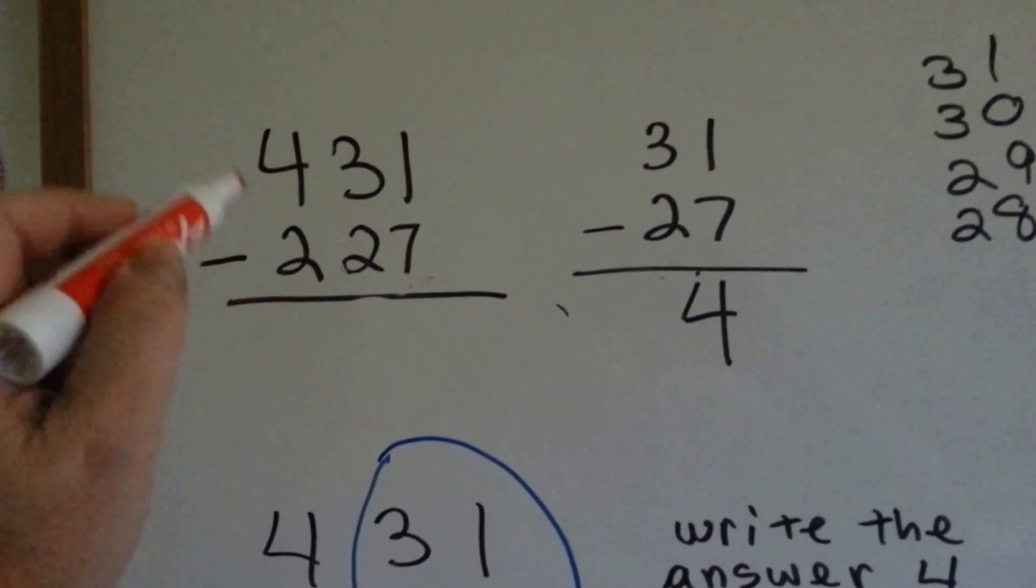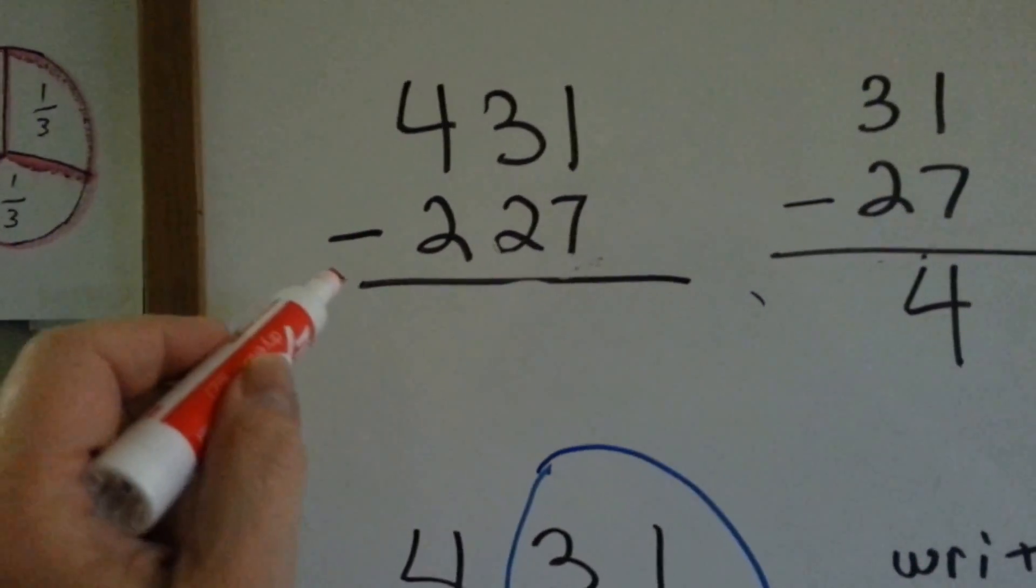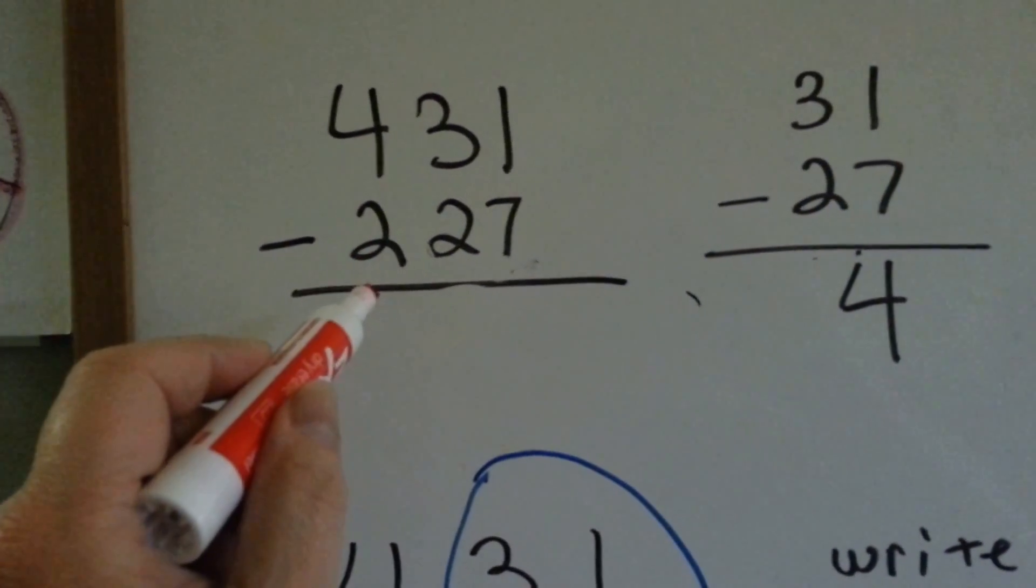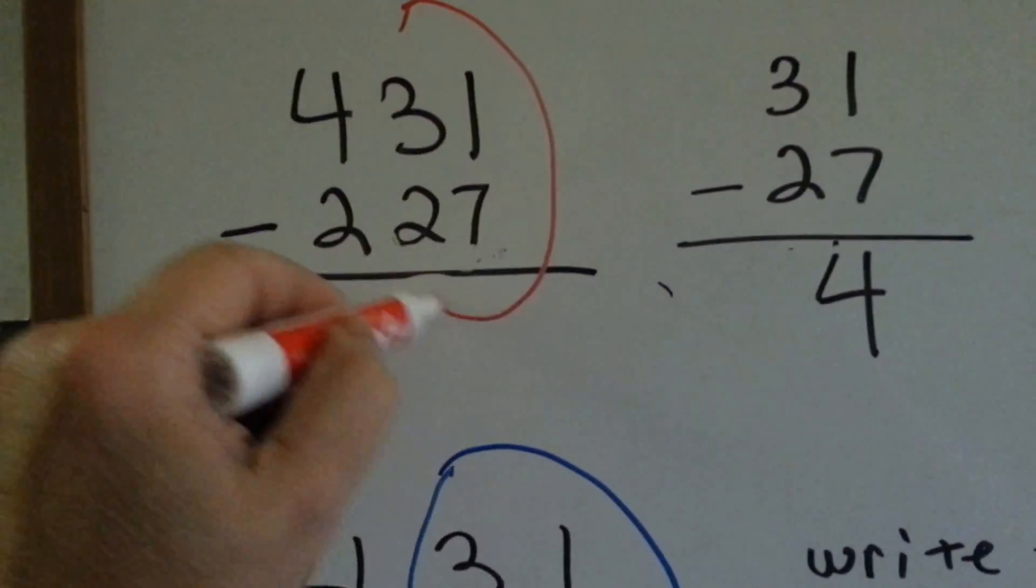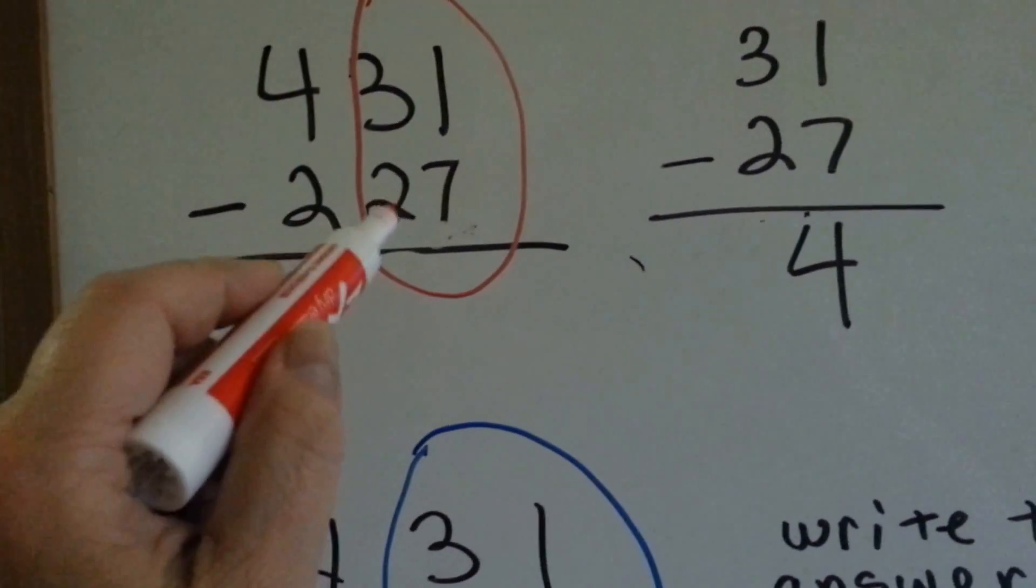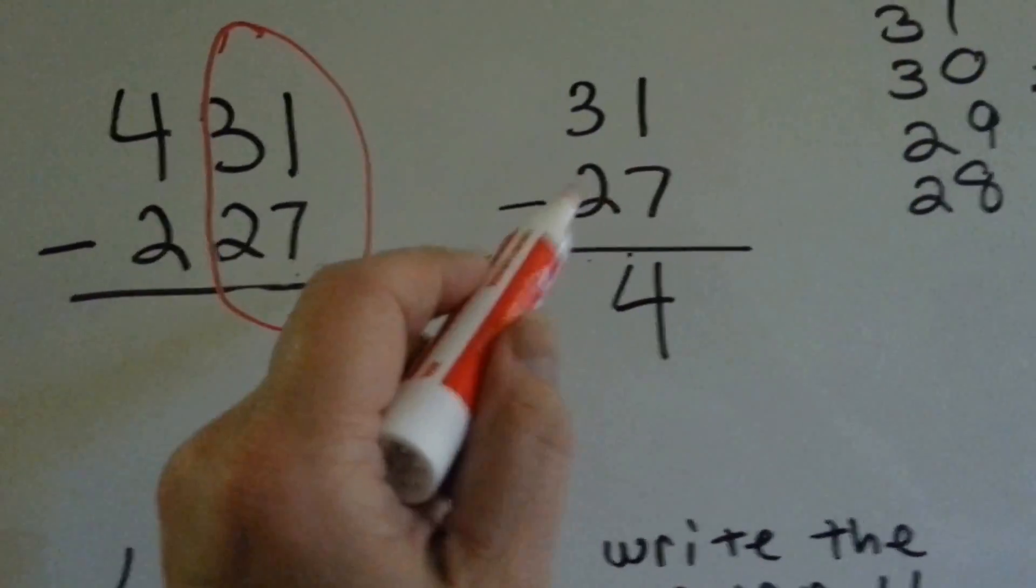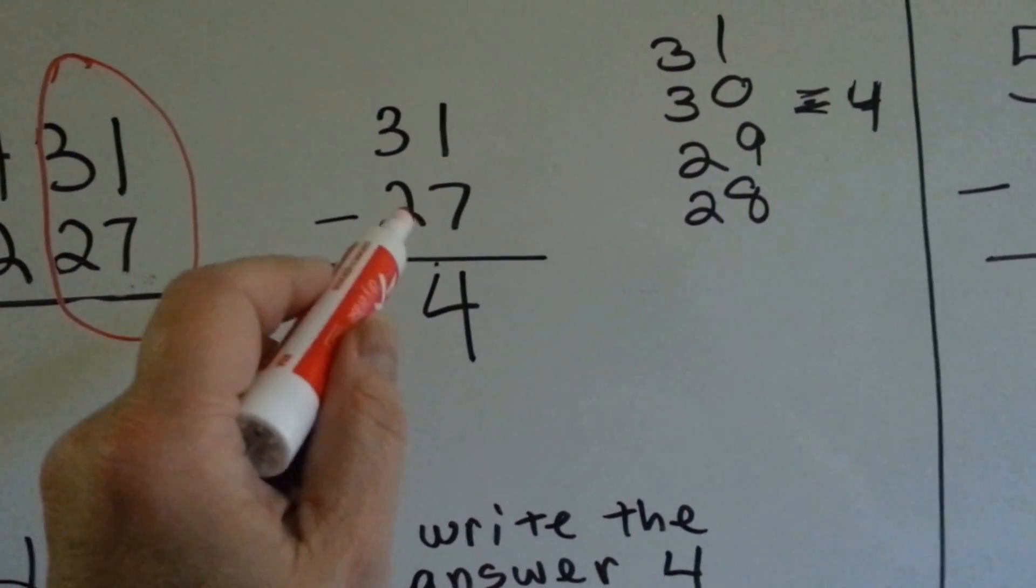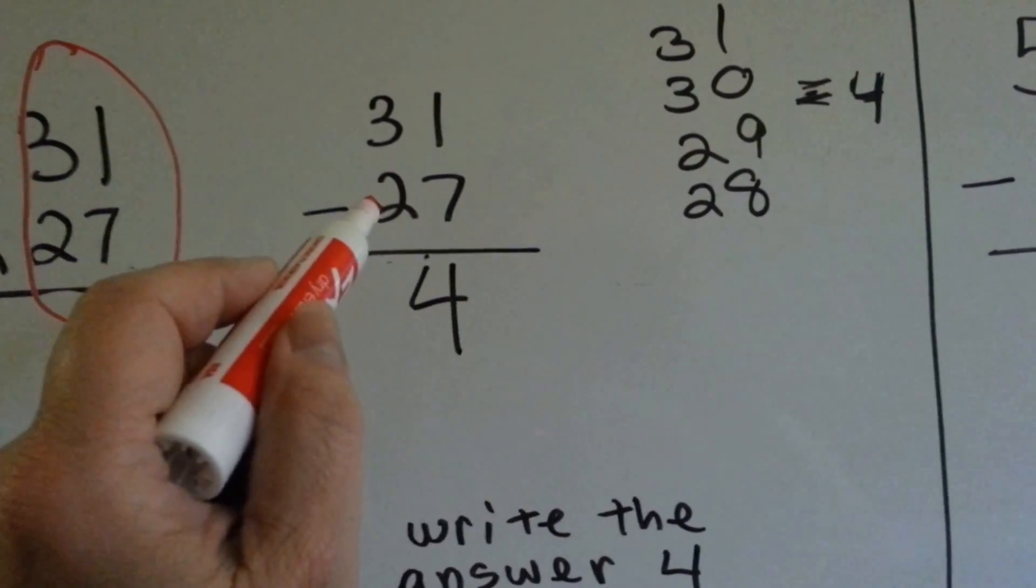Look at this number, 431 minus 227. If we combine these two place values, we have 31 take away 27. If we count up,